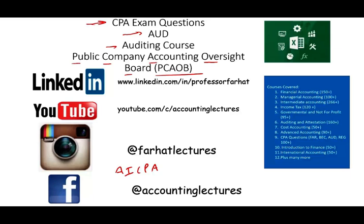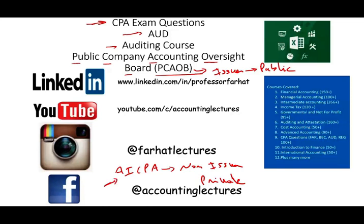The first thing to differentiate is that the PCAOB deals with issuers — publicly traded companies that issue stocks to the public. When dealing with the AICPA, we're dealing with non-issuer or private companies. This is a confusing topic for many students, and because it's confusing, the exam will find easy ways to trick you. You have to know which rules apply to the AICPA and which apply to the PCAOB.